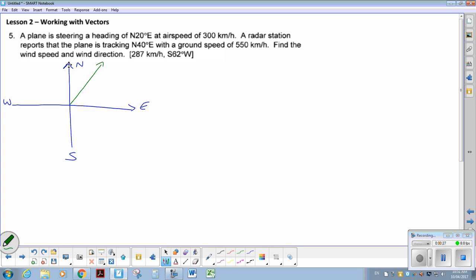So if they take off north 20 degrees east, that's not the angle I want. I'm going to use 70 degrees, because we always want it with the axis. And it is traveling at 300 kilometers an hour, so that's my magnitude.